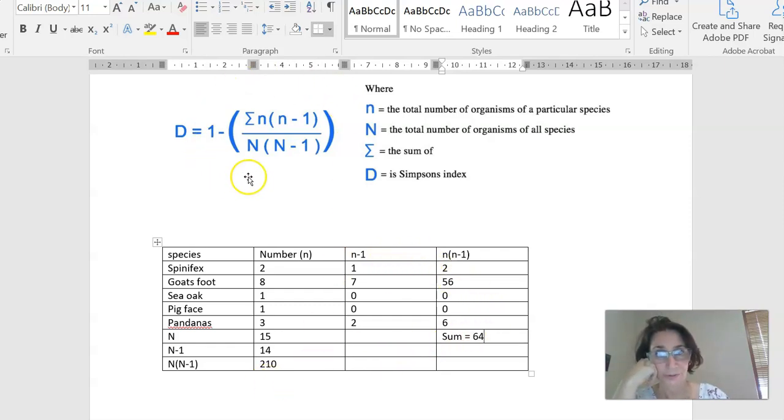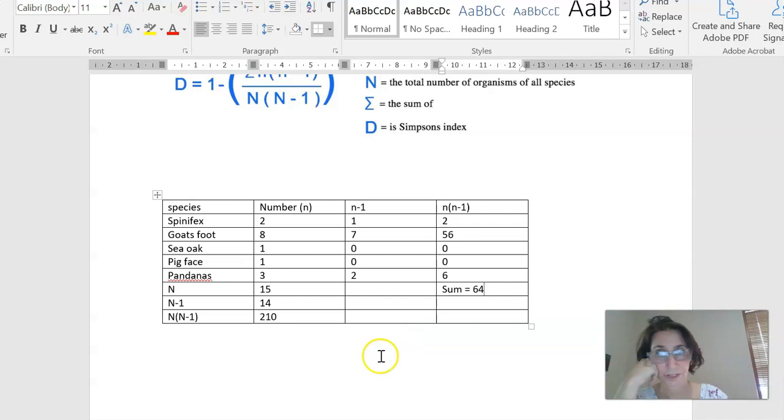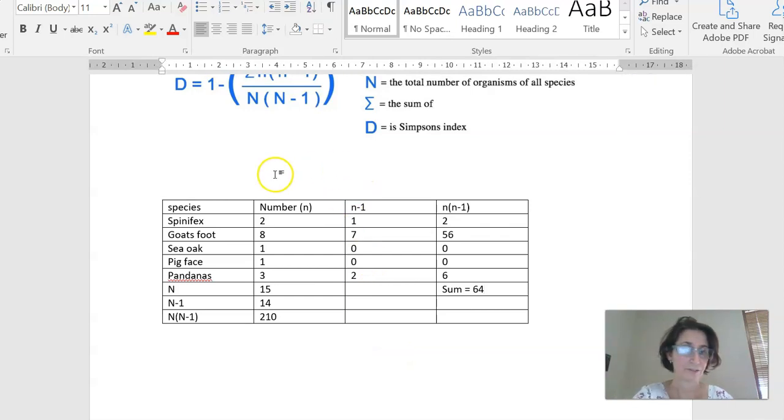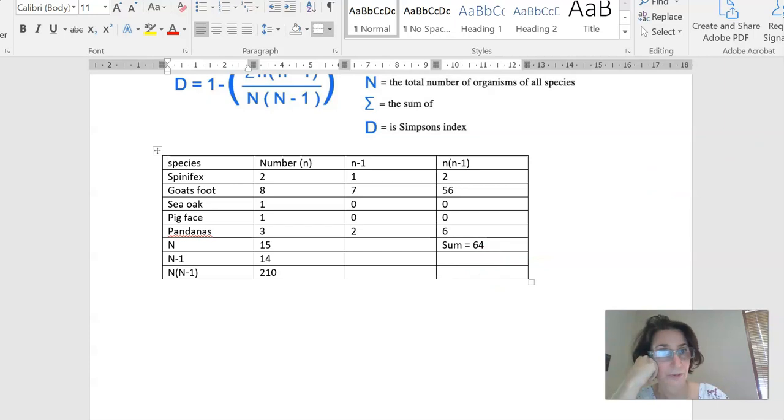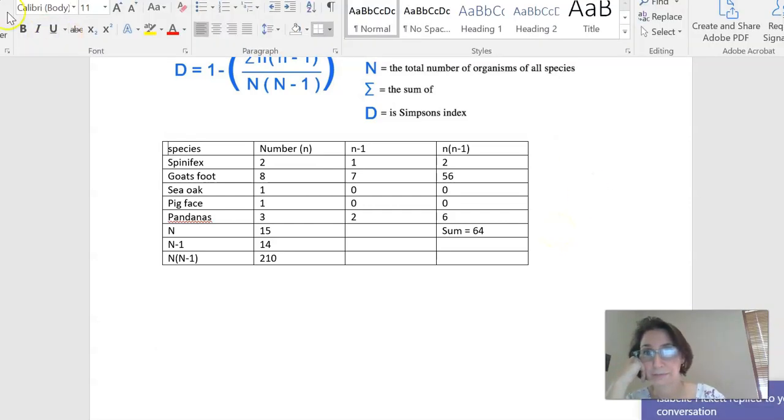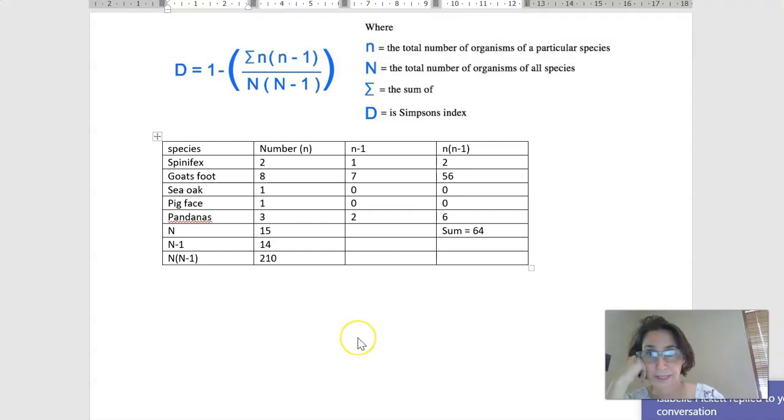We're nearly ready to put these numbers into our fraction here. So I'll just scroll up a little bit. And I'm going to write it by hand just because it's hard to do equations in a Word document. So we've got D is equal to 1 minus. Now, this number here, the sum is this number here. So that's 64 over the top of this number here, which is here. So 210.